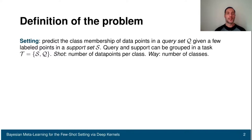In few-shot learning, we want to predict the class membership of data points in a query set Q, given a few labeled points in a support set S. Query and support are generally grouped in a task T. With the term SHOT, we identify the number of data points per class, and we determine with K the number of classes.